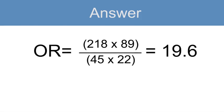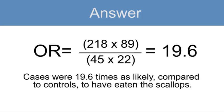To interpret this, you could use the following interpretation. There are other permutations, but here's a short one. Cases were 19.6 times as likely compared to controls to have eaten the scallops.